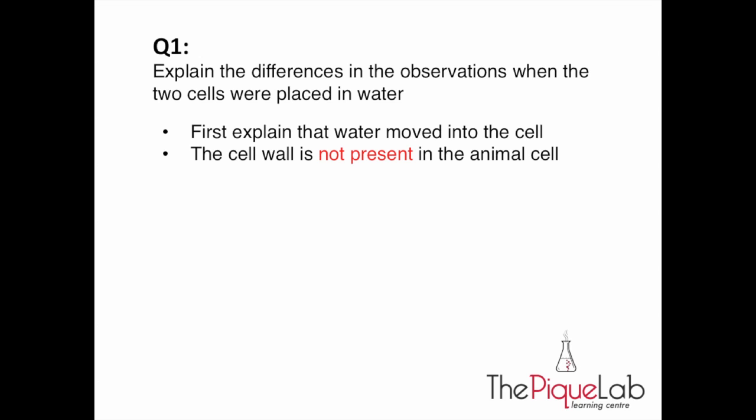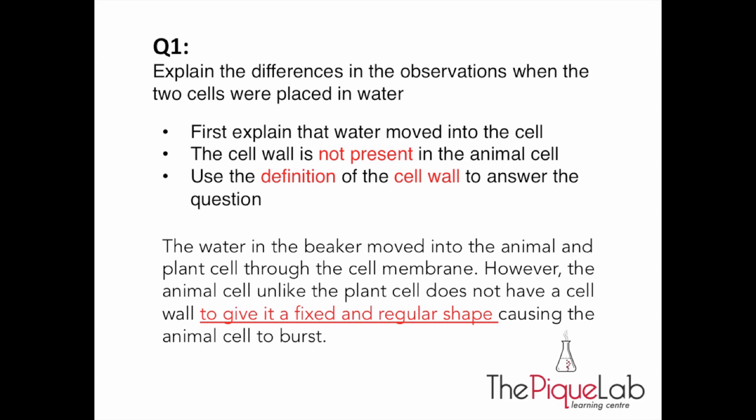Secondly, you tell me that the cell wall is not present in the animal cell. And thirdly, you use the definition of the cell wall to answer the question. So how you are going to formulate your answer is that, the water in the beaker moved into the animal and plant cell through the cell membrane. However, the animal cell, unlike the plant cell, does not have a cell wall to give it a fixed and regular shape, causing the animal cell to burst. The last part, causing the animal cell to burst is important because it represents the conclusion in the entire answer for it to be complete.